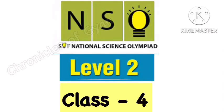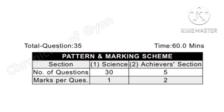NSO Level 2, Class 4 solved paper. There are two sections in the Level 2 NSO examination. The first section is Science, with 30 questions and each question carries 1 mark. The second and last section is the Achiever section, with 5 questions and each question carries 2 marks.